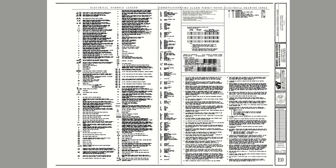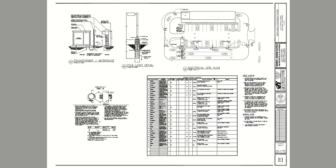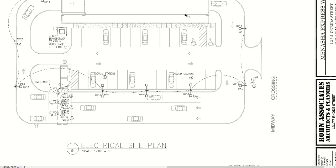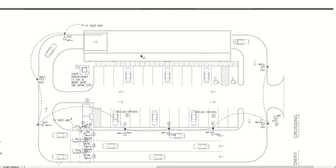Here are the plans — the E-sheets we've pulled out. This is part of a larger set; this is just the electrical discipline. As before, we have our legend, sheet index, and some general notes. So as we start to go through these plans, this is the site plan. The site plan has a little more on it than the other two. We do have the site lighting, as we've seen before, and we show the circuitry of that.